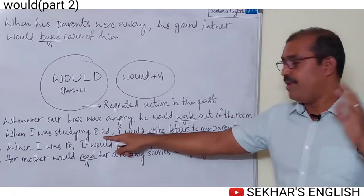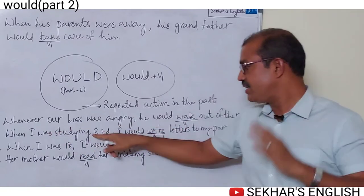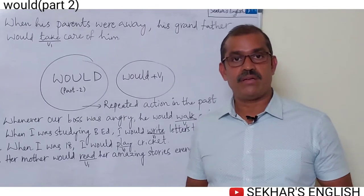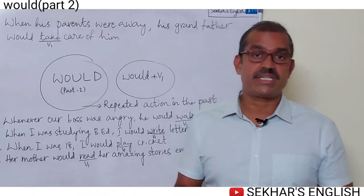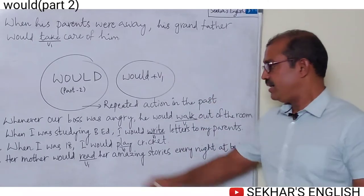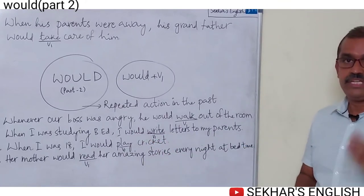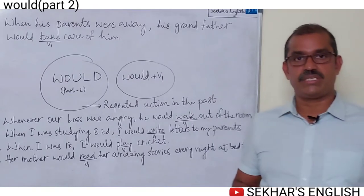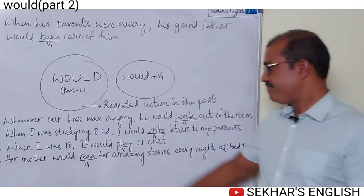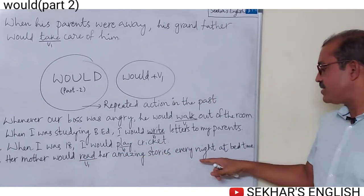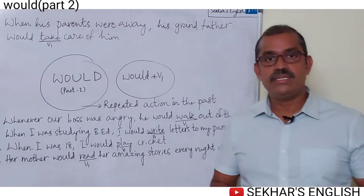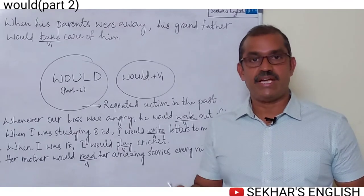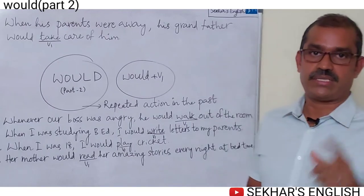Third example: 'Whenever studying Bachelor of Education — BED, the full form is Bachelor of Education — I would write letters to my parents.' I writing letters to my parents when I was studying Bachelor of Education is the repeated action in the past. Next: 'When I was 18, I would play cricket' — playing cricket when I was 18 is a repeated past action. And: 'Her mother would read her amazing stories every night at bedtime' — her mother reading stories every night at bedtime is also a repeated past action.